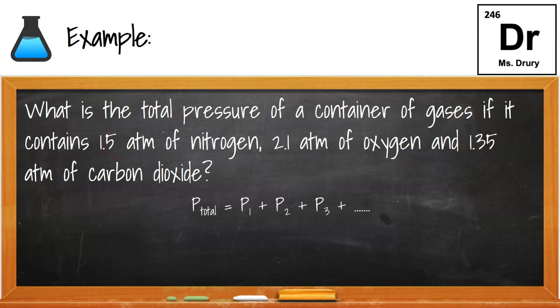So it was as simple as adding them together. So the 1.5 is the first pressure, the 2.1 is the second pressure, and the 1.35 is the third. There could even be a fourth and a fifth, but in this case, that was all that was there. We add them together to get a total pressure of 4.95.